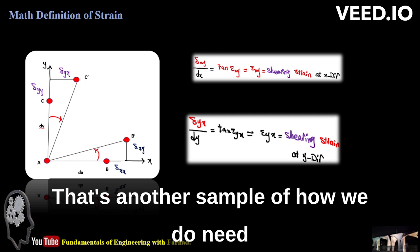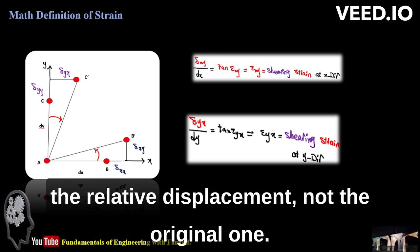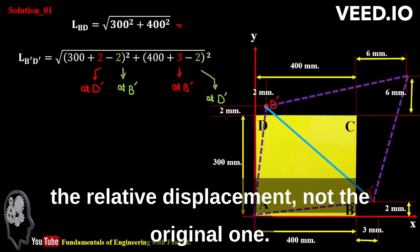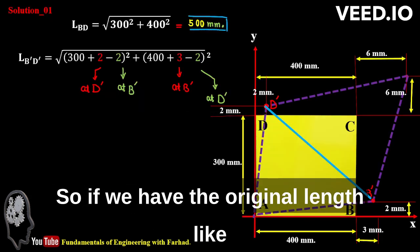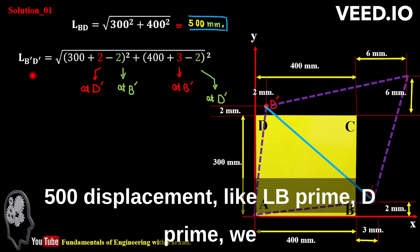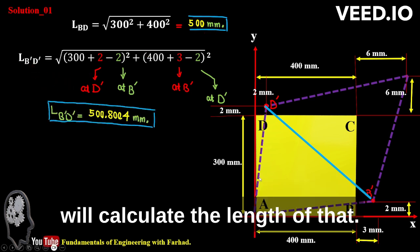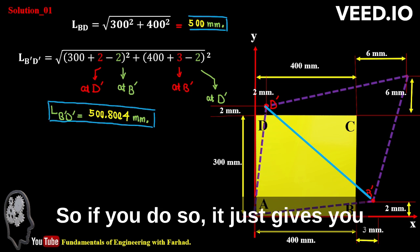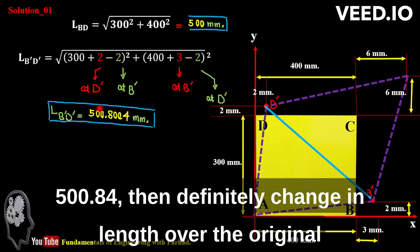That's another sample of how we need the relative displacement, not the original one. So if we have the original length like 500 millimeters, the displacement like L B prime D prime, we calculate the length of that. If you do so, it gives you 500.8004 millimeters.